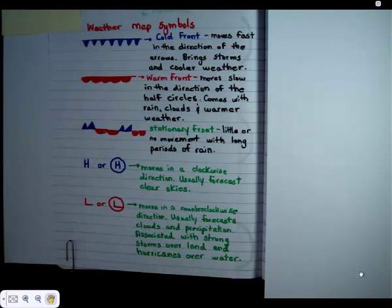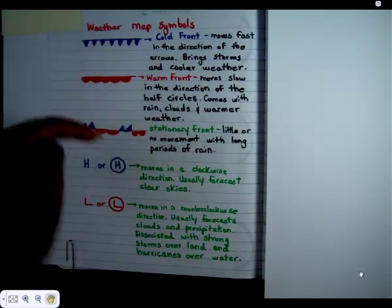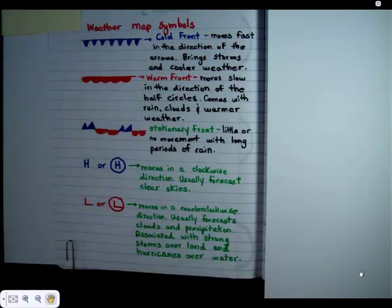If you see a cold front symbol like this, that means it will be moving south in the direction of the arrows pointing.